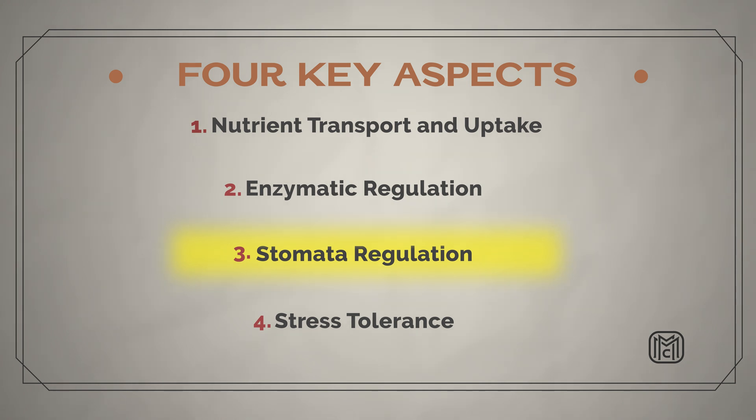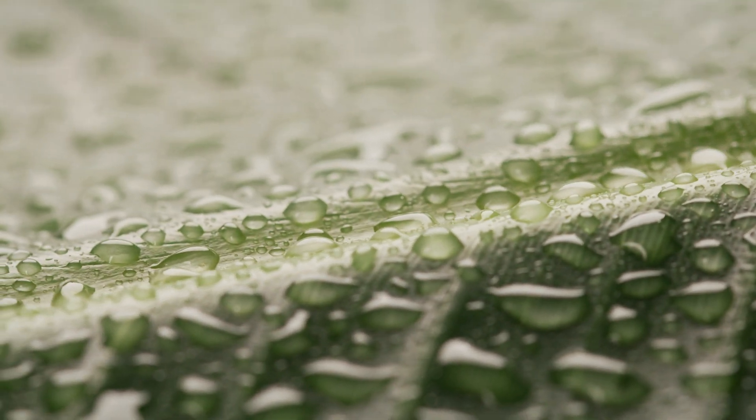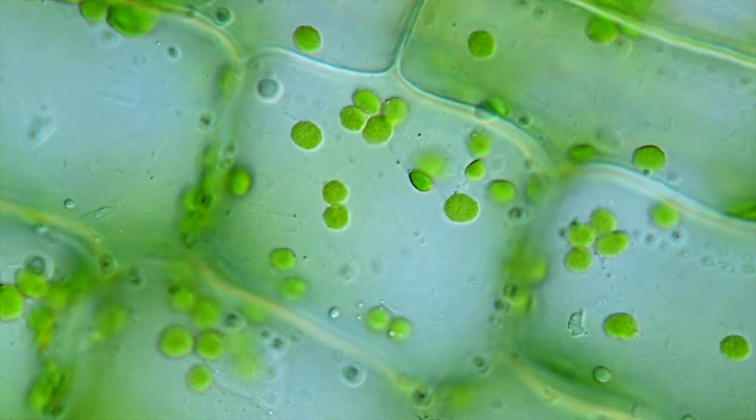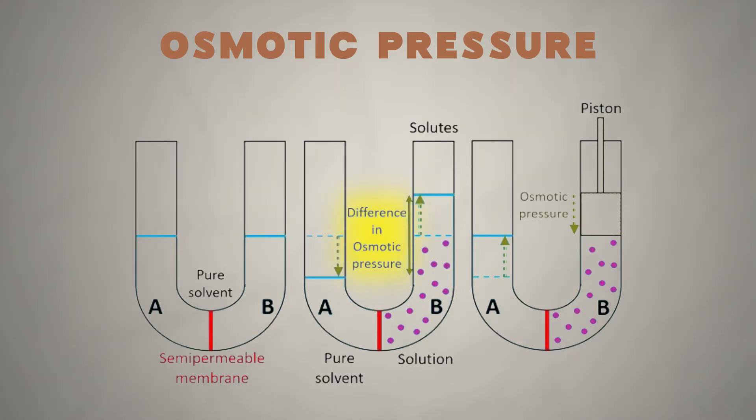The third category, stomatal regulation, goes back to osmotic potential. Potassium acts as a gatekeeper in those guard cells, working in tandem with calcium to ensure stomata open and close in a timely fashion. When the turgor pressure in the leaf reaches the point where it needs to open those stomata, if potassium is not present, there's a latent effect — transpiration is not optimal, nutrient cycling slows down, and the whole system breaks down.